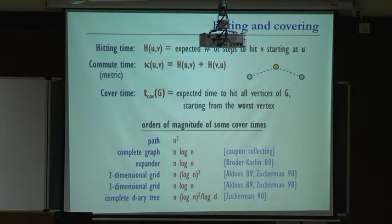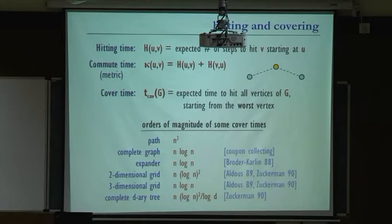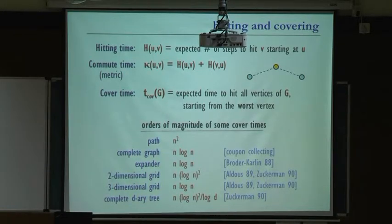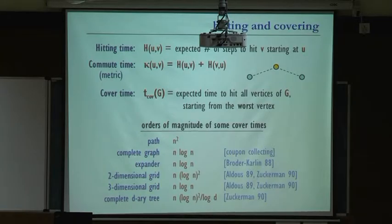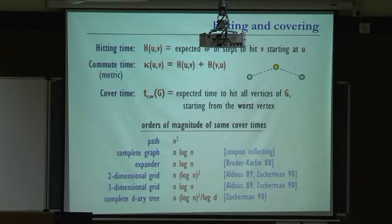What is the method used to analyze cover times? Upper bounds tend to be easier. One way to prove an upper bound is, for each point, estimate the chance it will take a very long time until it's covered, and just do a union bound over all of these. This crude method surprisingly gives the right answer in many cases. But to prove it gives the right answer, you need a lower bound — and lower bounds are hard.